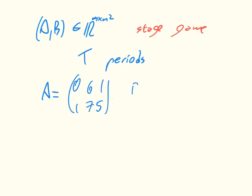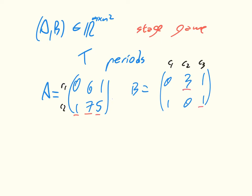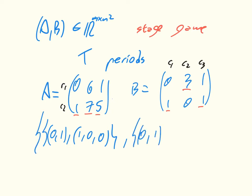As a running example we're going to use this stage game — nothing has changed, it's the same as before. The pure strategies available to our players are just as before: r1 and r2 for the row player, and c1, c2, and c3 for the column player. We can look at best responses and immediately see that we have two Nash equilibria: (r1, c1) paired with its corresponding mixed strategy, and the second equilibrium.